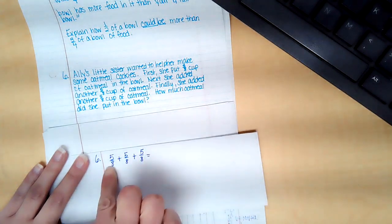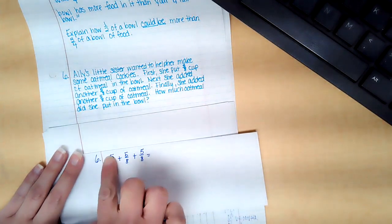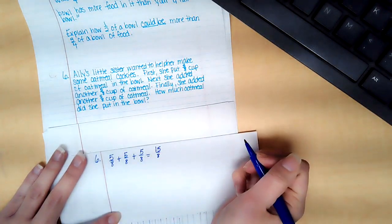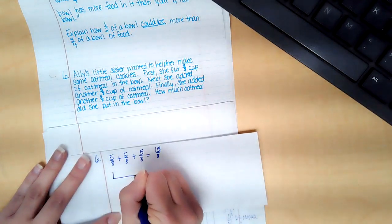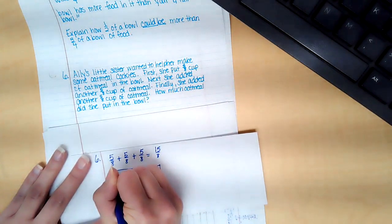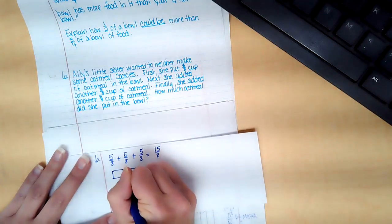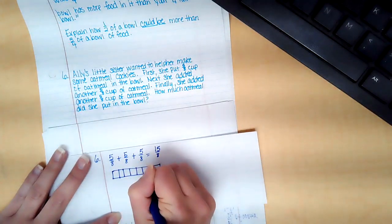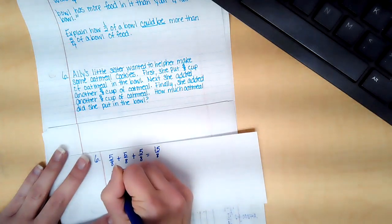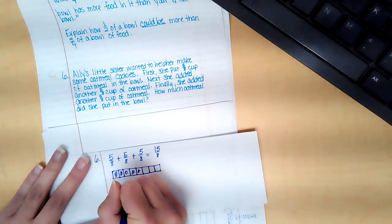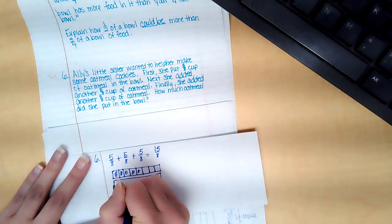And since they all have the same denominator, I could just go five, ten, fifteen. That's fifteen eighths. You could also draw a picture of eighths. Let's see. And then color in one, two, three, four, five. And then do that again, and again.